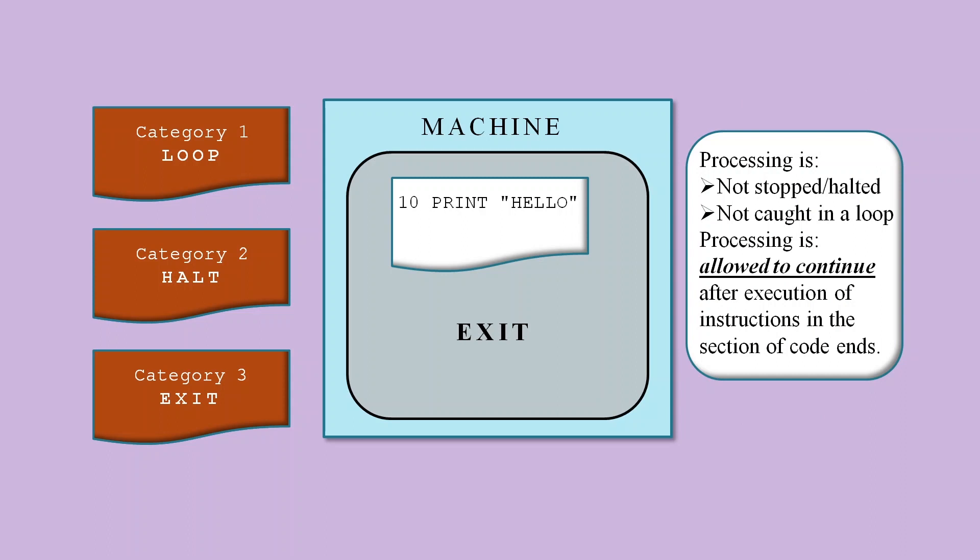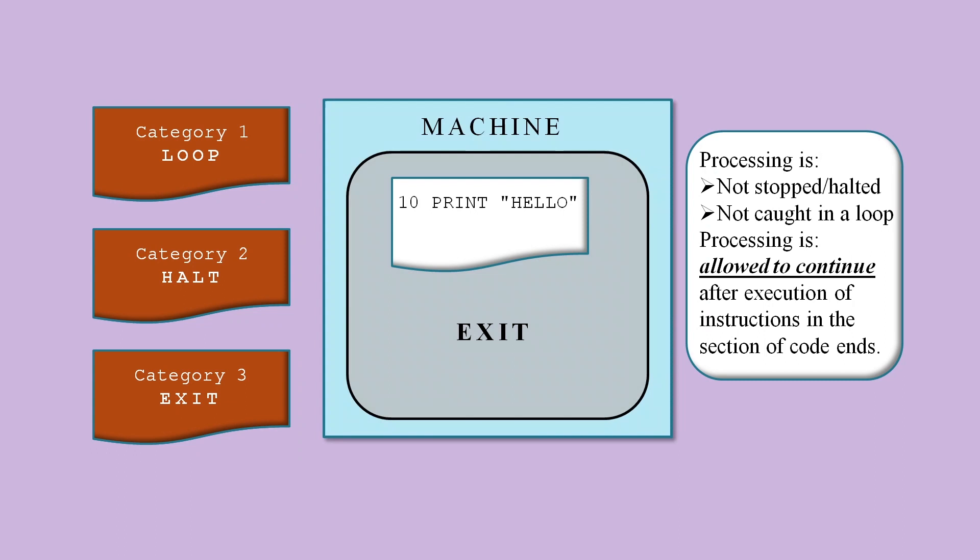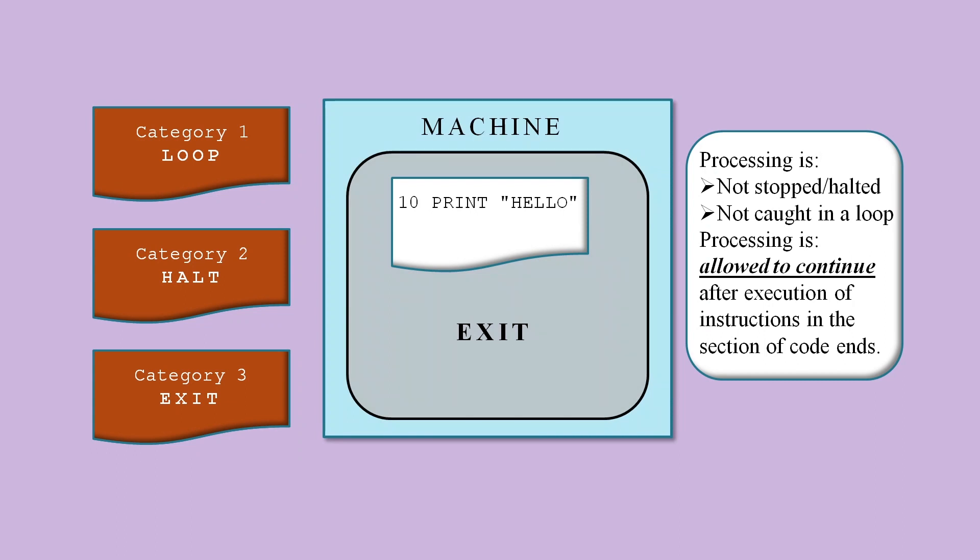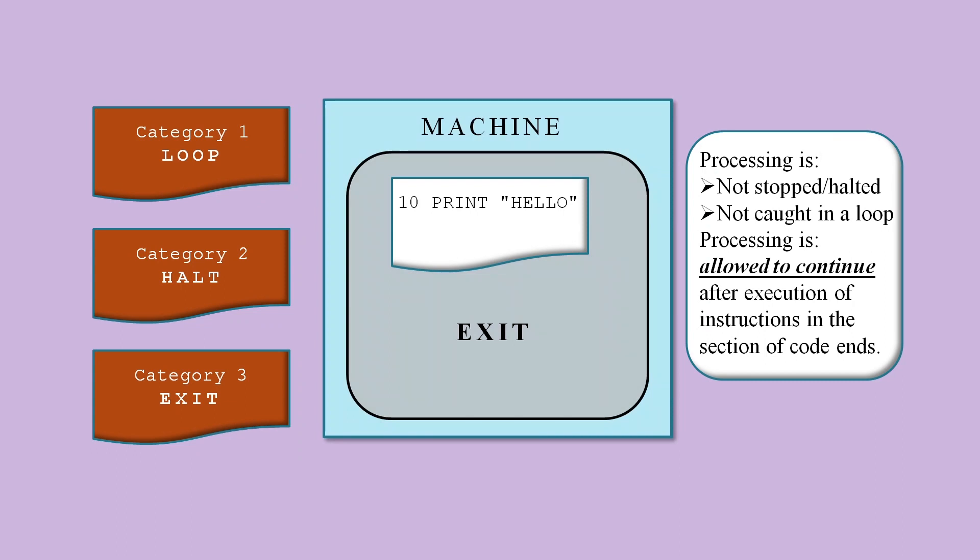A key point about this exit category is that the processing is allowed to continue after the end of the section of code. If there's no operating system for example, then it's down to the design of the machine itself what it will do after the last program instruction has completed. It might decide to halt or it might decide to start again from the first instruction, in which case the machine itself could cause an otherwise exiting program to go into a loop.